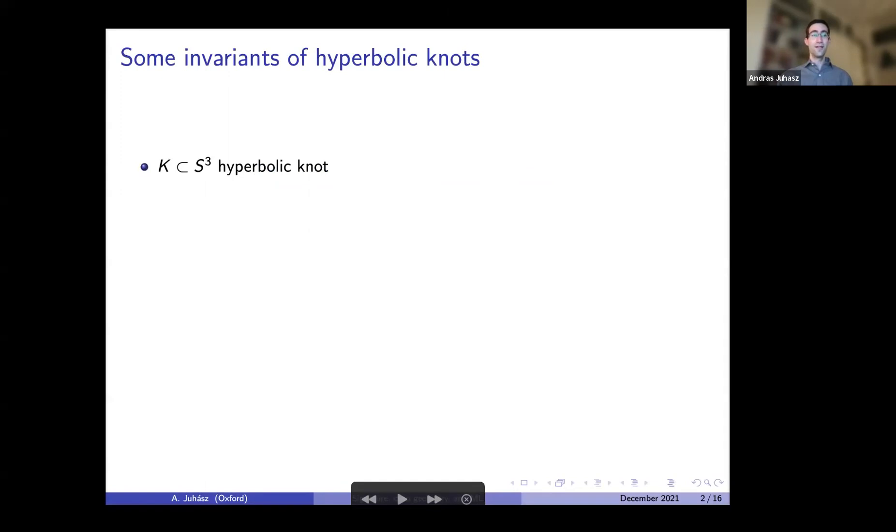Let me quickly recap some hyperbolic invariants of knots. So let K be a hyperbolic knot in the 3-sphere, which means that its complement has a complete finite hyperbolic metric. One of the fundamental invariants you can extract is the volume. By Mostow rigidity, the hyperbolic metric is unique up to isometry and any geometric quantity you define using that metric will be a topological invariant of that knot.